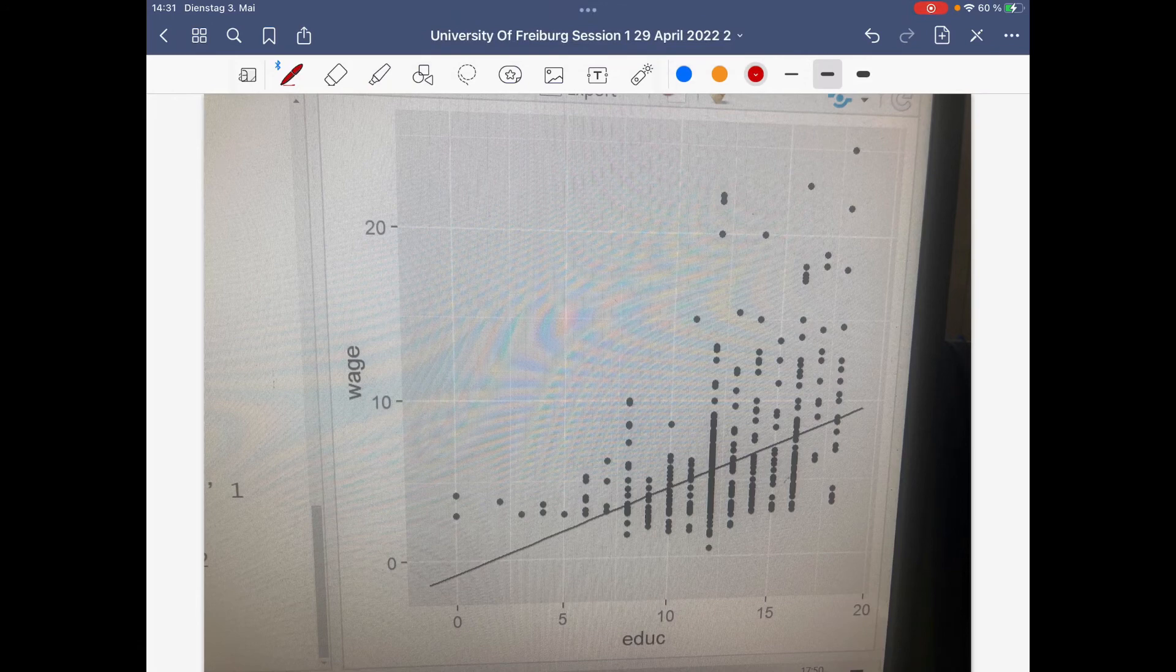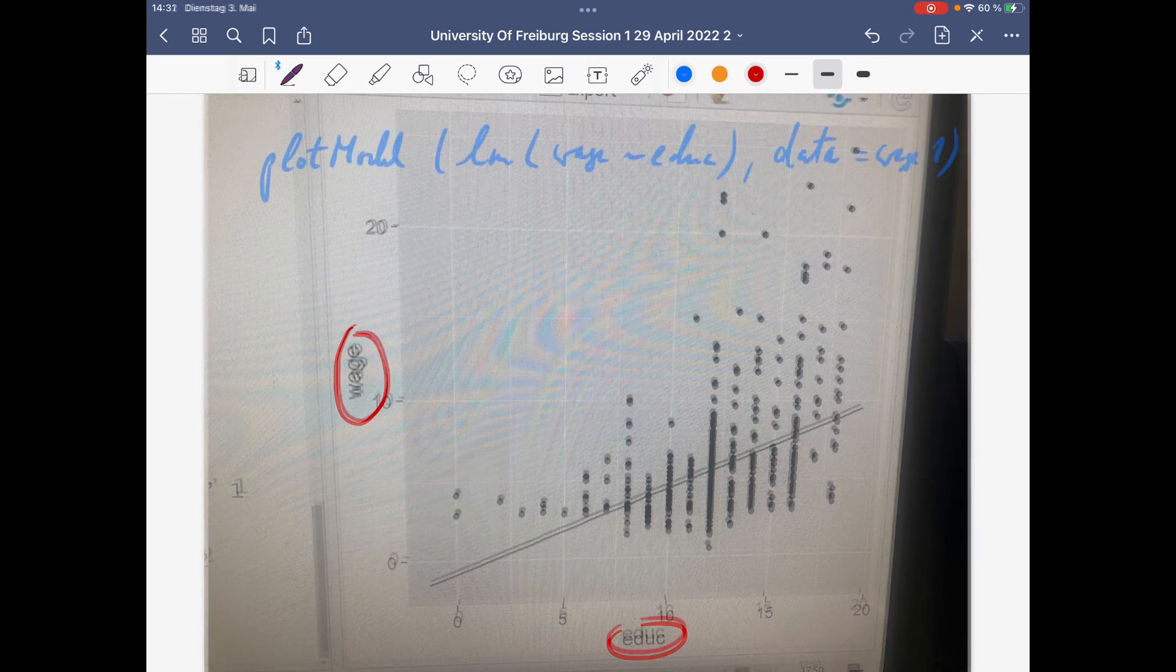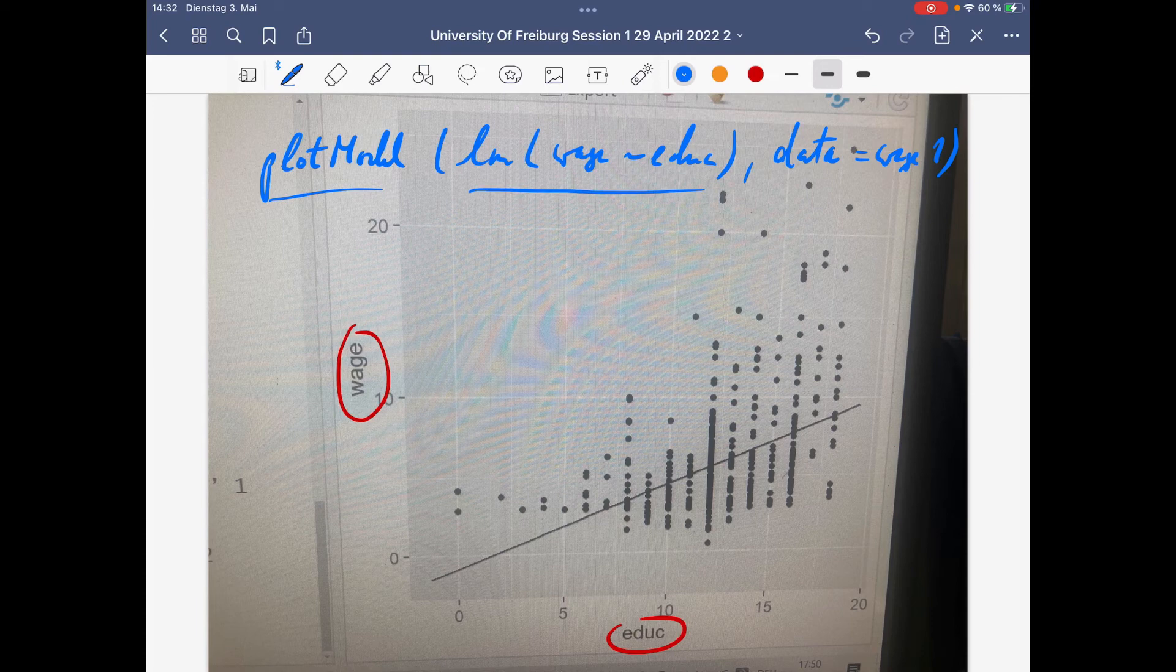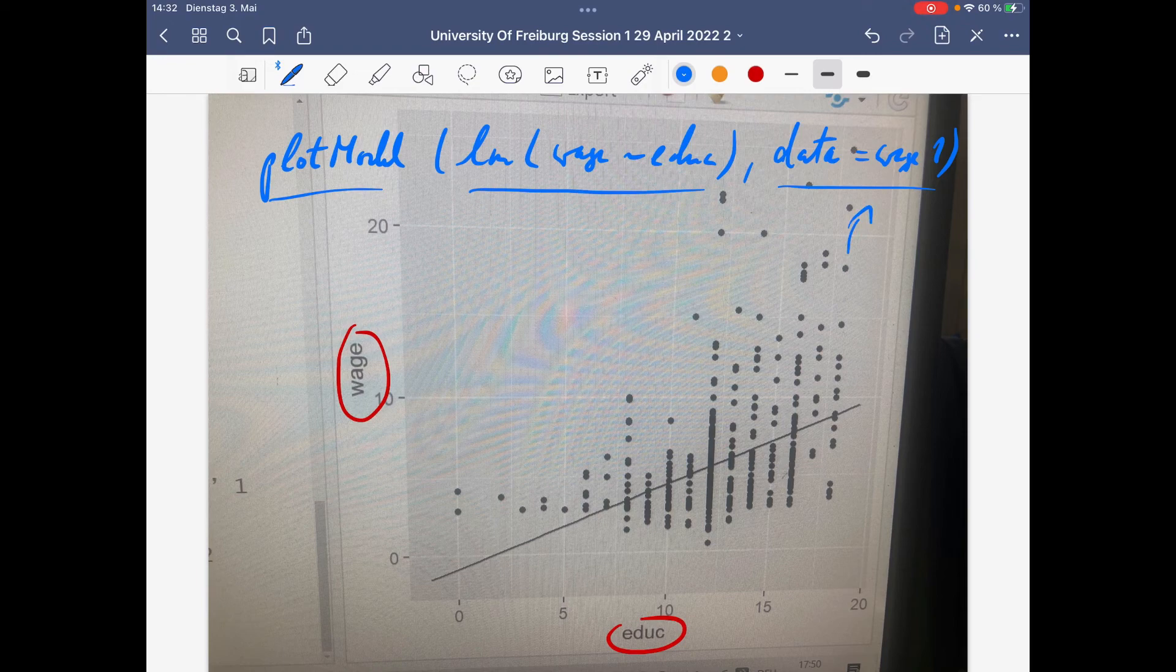So in R, the regression line looks like that, and we get it via plot model. The command is plot model, then the regression equation, and then the data set. This is necessary to insert the data set, otherwise it doesn't work.